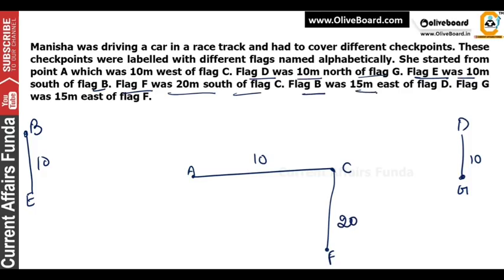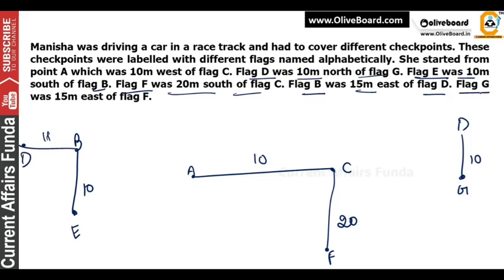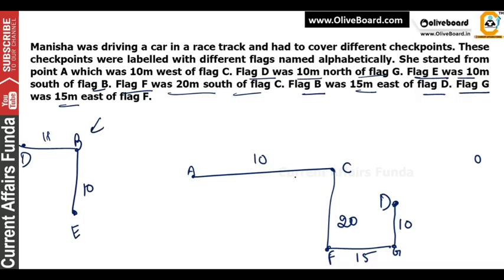Flag D was 15 meters east of flag B. Flag G was 15 meters east of flag F. So we connect: G is 15 meters east of F, and B is 10 meters north of G. D is 15 meters east of B, and E is 10 meters south of B. So E, G, and F will be on the same vertical line. D and B will be on the same line — this will be the correct diagram.